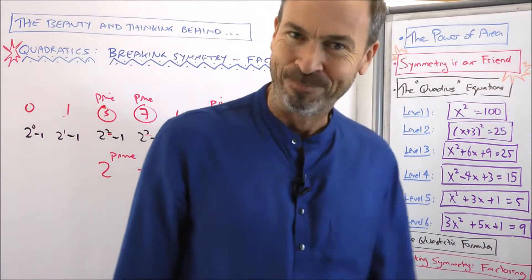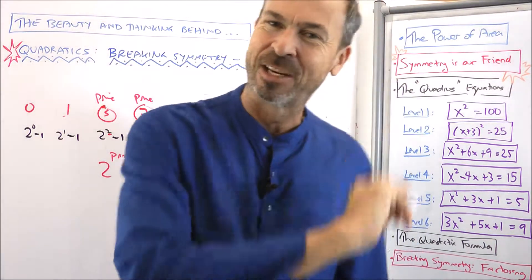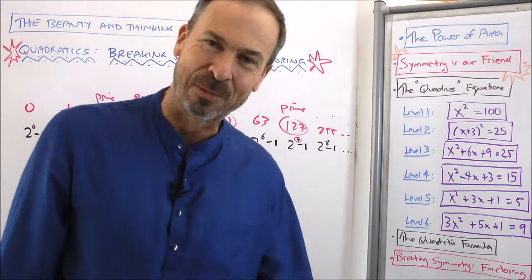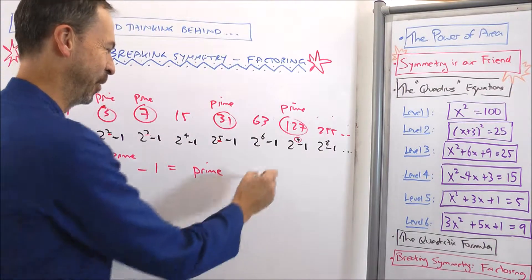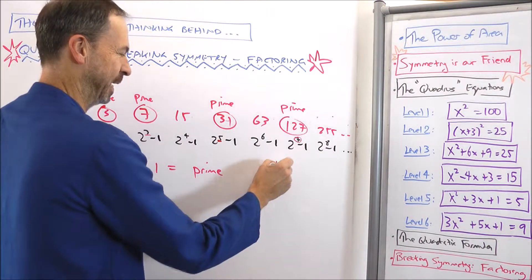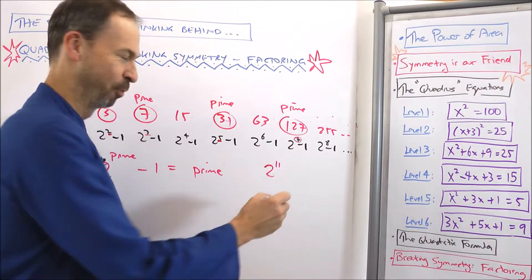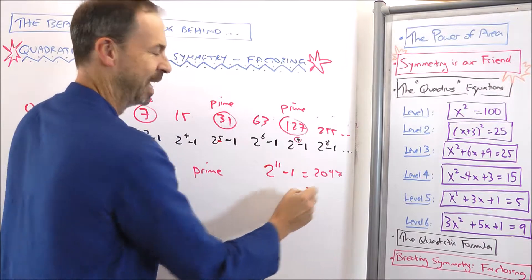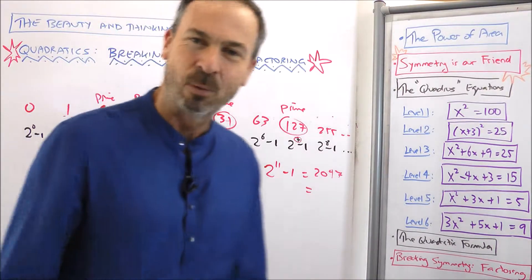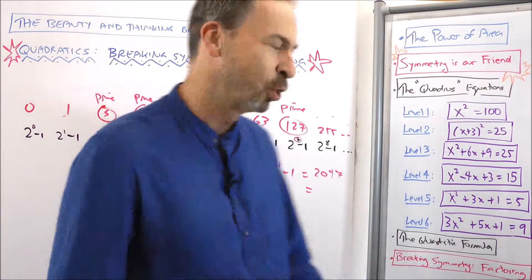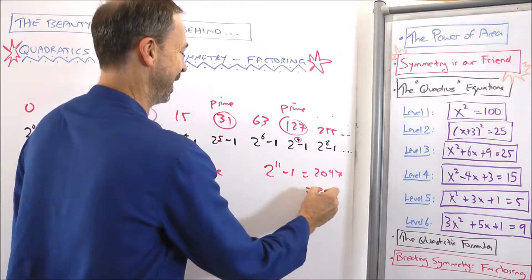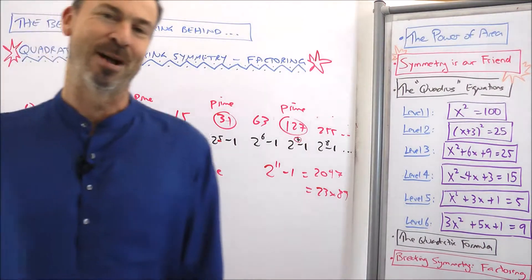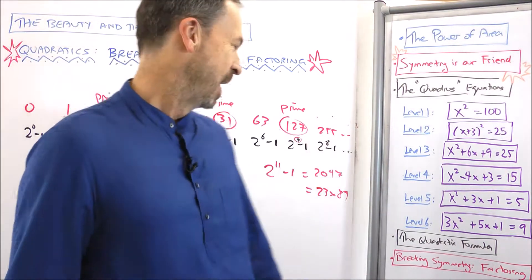Hmm — actually that turns out to be a false pattern, because people realised fairly early on that 2 to the 11 — 11's prime — minus 1 is 2047, and that turns out to equal 23 times 89. So it's not prime.